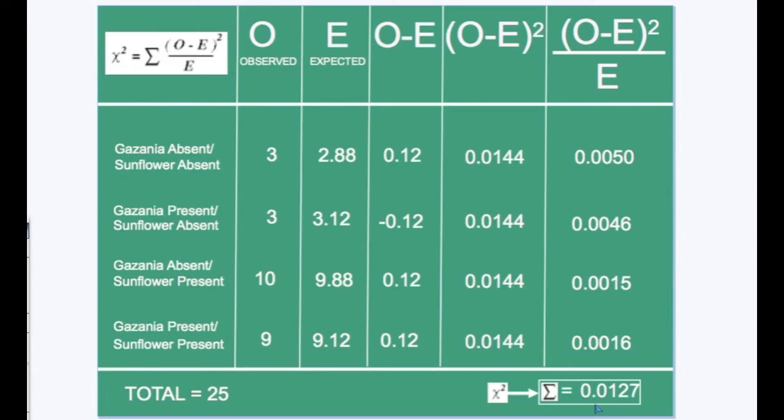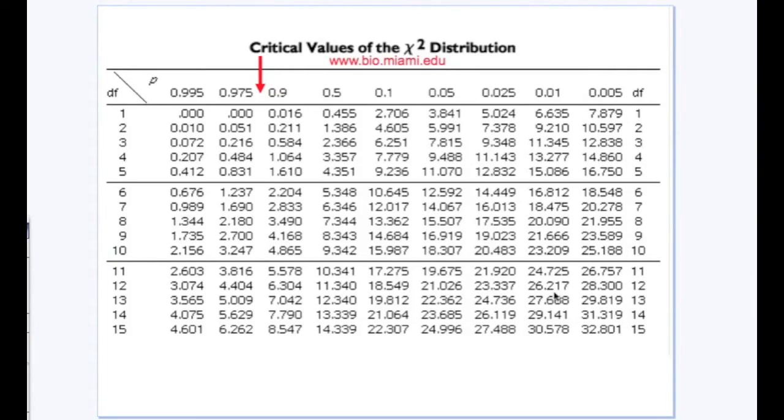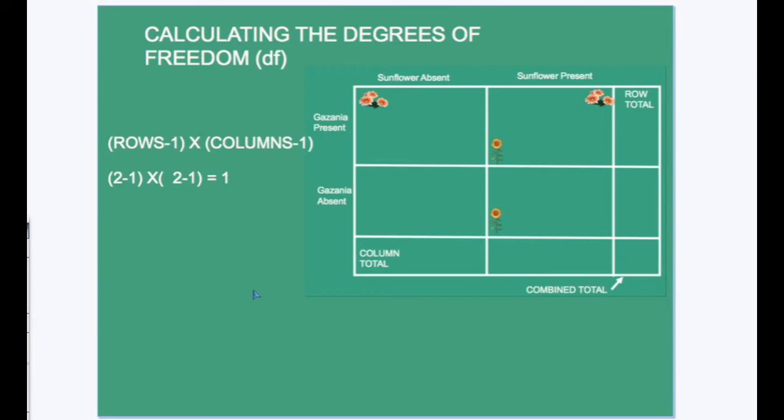The next step requires a table of critical values for chi-squared and the value of 0.0127 must be located within this table. But before this can be done, the degree of freedom must be calculated, df. To calculate the degree of freedom, this formula is used: rows minus one, and here we can see two rows, two minus one comes to one. Columns minus one, and here we can see two columns, two minus one comes to one. One times one equals one. So the degree of freedom for this 2x2 contingency table is one.